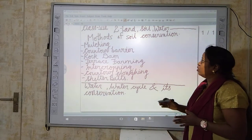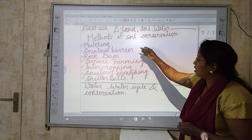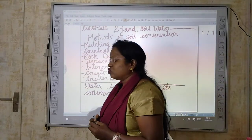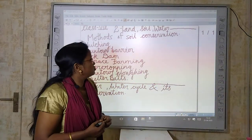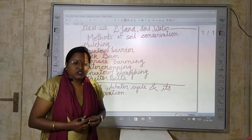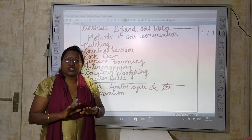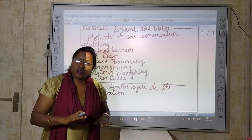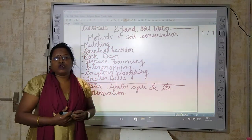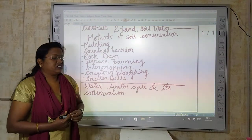Now we are going to study about methods of soil conservation. The first method is mulching. Mulching means we are spreading a thatch or grass over a particular layer of the soil so that the soil regains its moisture. In that way the quality of soil will be regained. This is how we practice mulching.